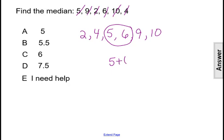So we'll do 5 plus 6, that value, that sum, divided by 2 since there's two numbers. So 5 plus 6 is 11, and 11 divided by 2 is 5.5.